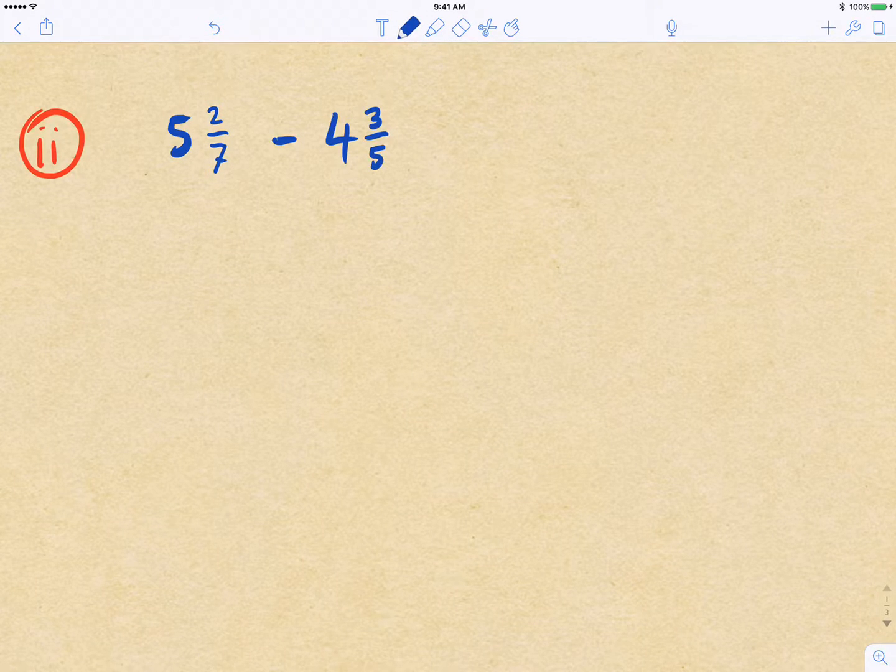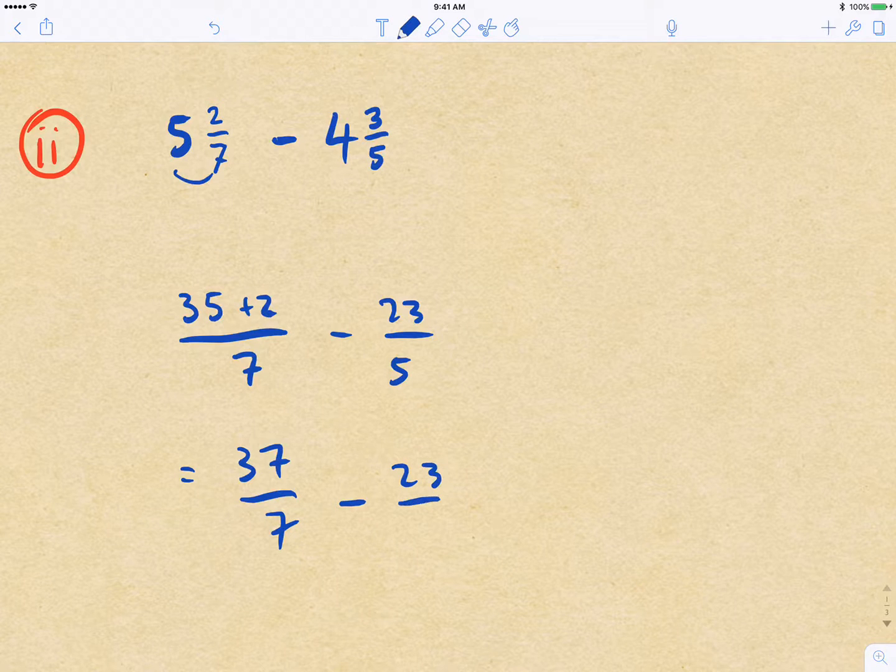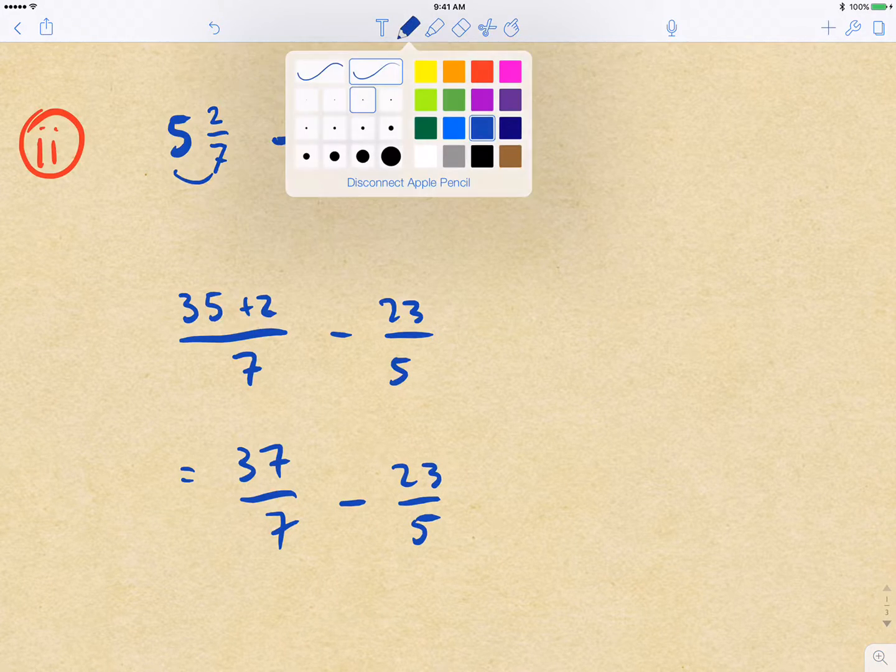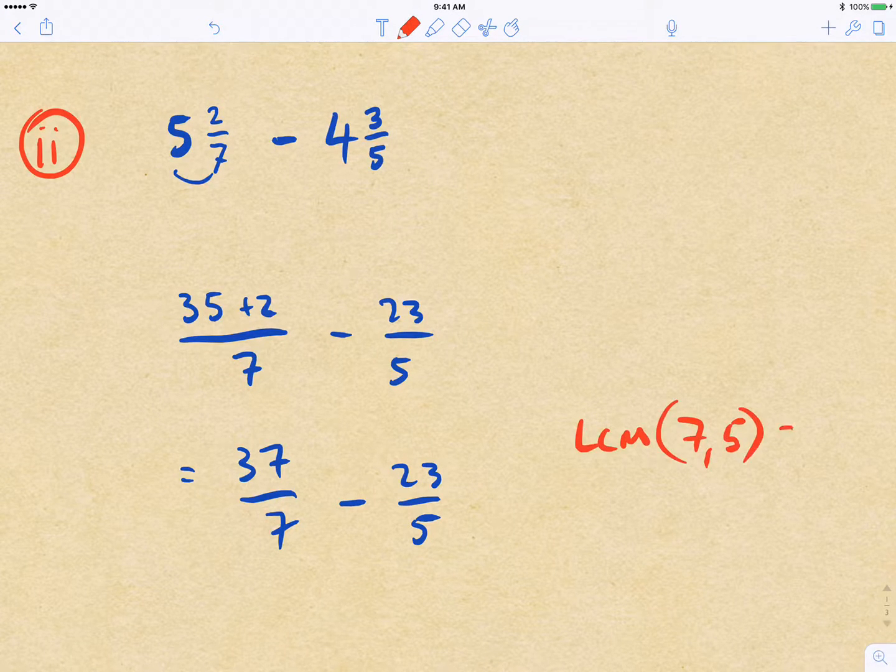Now if I do what I did before and convert it into improper fractions, I'm going to have 5 times 7 gives me, there's 35/7 plus 2 on 7, minus 4 times 5 is 20, 23 on 5. And so all up, I have 37 on 7 minus 23 on 5. And I have to get into common denominator. So lowest common multiple of 7 and 5 is actually 35.